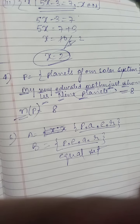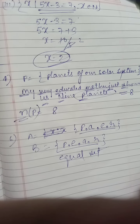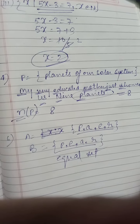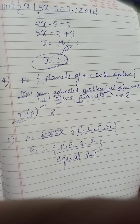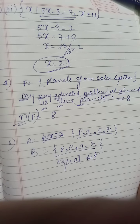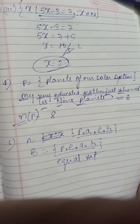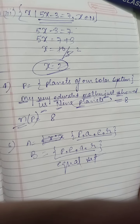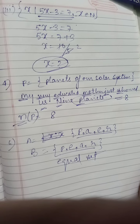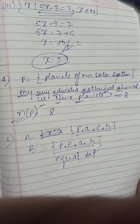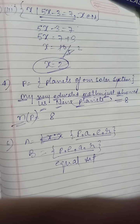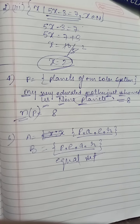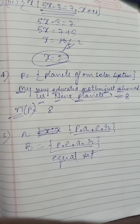Next, from the following pairs of sets identify disjoint and overlapping sets. Overlapping means if at least one element is common, then it is overlapping. In the first pair, sets have D as a common element, so it is overlapping. In the pair {3, 1, 5} and {0, 2, 4, 6, 8}, no element is common, so it is disjoint.